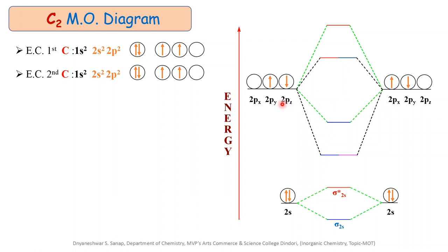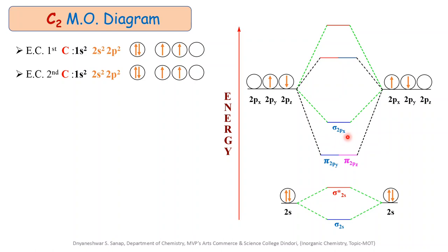When the 2p atomic orbitals of both carbon atoms combine together, they produce 6 molecular orbitals — 3 bonding and 3 anti-bonding. In the case of the C2 molecule, the energy gap between the 2s and 2p atomic orbitals is minimum. That is why the energy of the pi orbitals is lower than the energy of the sigma orbital. The bonding pi molecular orbitals are denoted π2py and π2pz, which are degenerate, and the higher energy bonding orbital is σ2px. The anti-bonding orbitals are π*2py, π*2pz, and σ*2px.